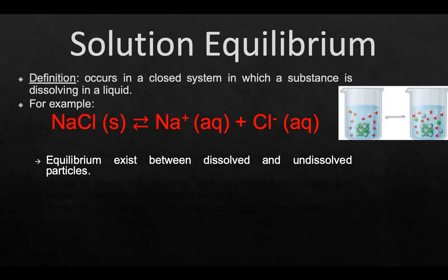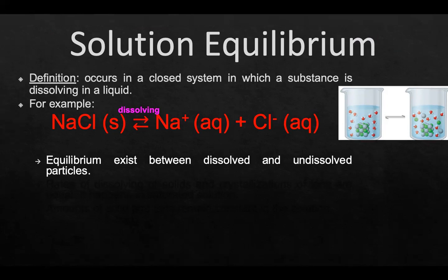Equilibrium exists between the dissolved and undissolved particles because there's only a certain amount of salt that we can dissolve in a certain amount of water. The forward reaction is dissolving, and the reverse reaction is crystallization—when the salt crystals precipitate and turn back into a crystal.